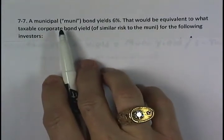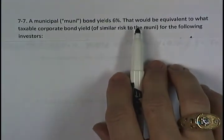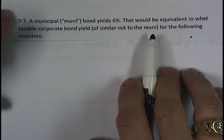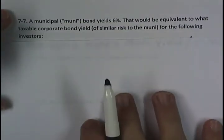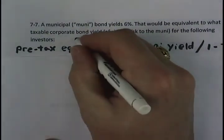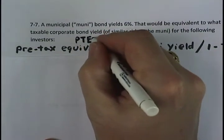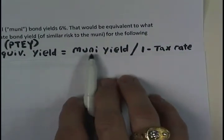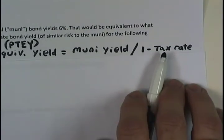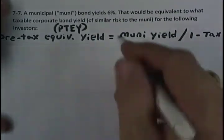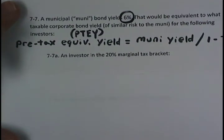Problem 7.7 says a municipal or muni bond yields 6%. That would be equivalent to what taxable corporate bond yield of similar risk to the muni for the following investors? Our investors have different tax rates. That's how they differ. What we need to remember is that we're going to solve for what's called the pre-tax equivalent yield, or the taxable corporate equivalent, but we'll refer to it as the pre-tax equivalent yield, PTEY. That's calculated by taking the muni yield and dividing by one minus the tax rate. Thus, that pre-tax equivalent, if we would then multiply by one minus the tax rate, would give us that tax-free municipal yield. So, we're dealing with a 6% muni yield in both parts of this example.